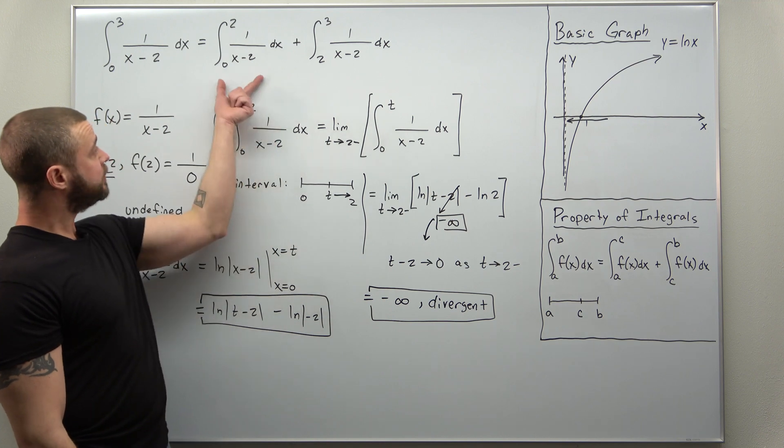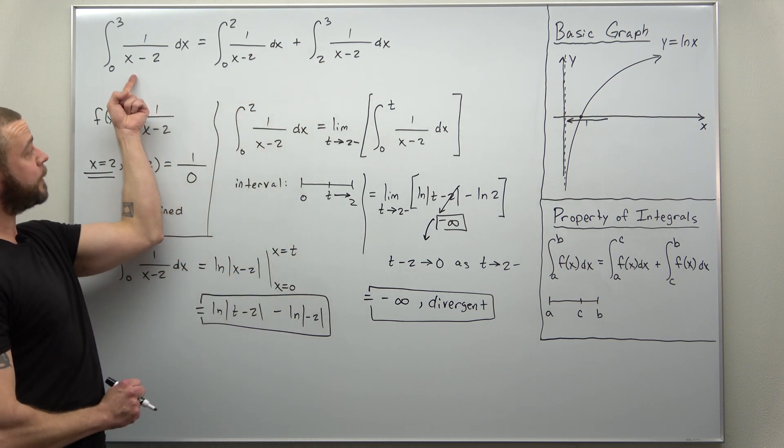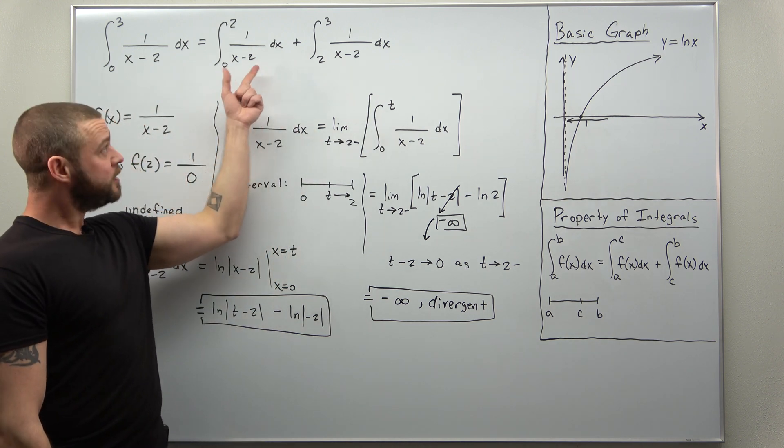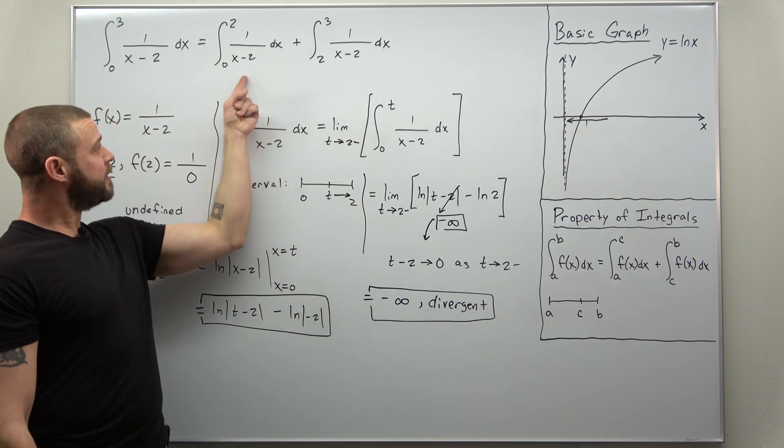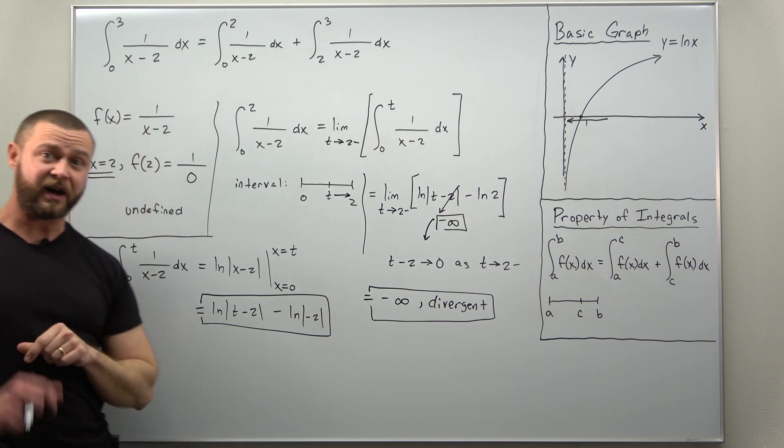Now we had two improper integrals from our original improper integral. As long as one of these is divergent, you don't even have to worry about checking the other part. As long as one of them is divergent, the whole improper integral is divergent.